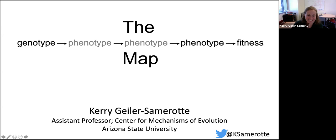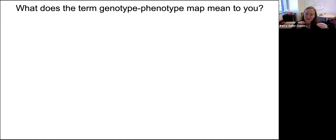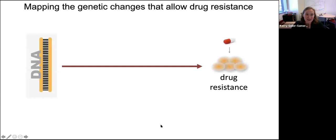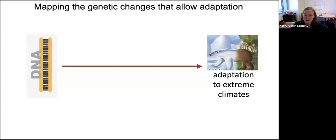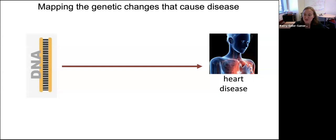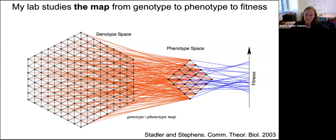What I'm going to talk to you about today is my interest in the genotype-phenotype map. This word means so many different things to so many different people. Some scientists are interested in identifying genetic changes that allow bacteria or tumors or viruses to become drug resistant. Others map genetic changes for climate adaptation or contributions to human disease. The key is that we're not necessarily interested in mapping any particular phenotype — we're more interested in the map itself.